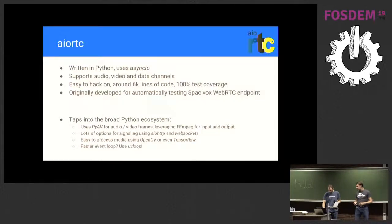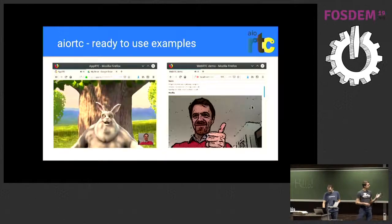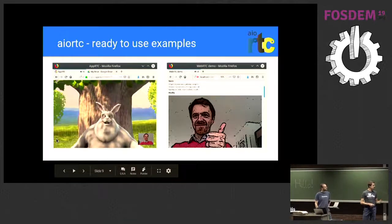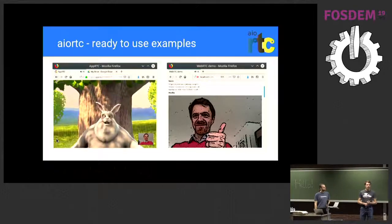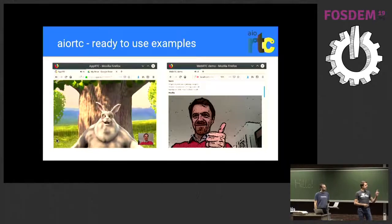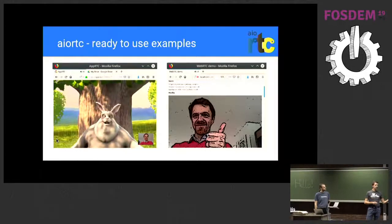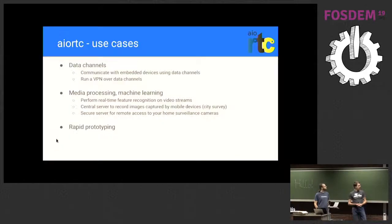AIO RTC comes with a growing collection of built-in examples. On the left, we have streaming Big Buck Bunny from an MP4 file into the apprtc demo website — something you can do with zero extra lines of code. On the right is an example where a browser talks to a Python-based server which handles both signaling and media, applies real-time processing on the video frames, and sends them back — in this case with a cartoon effect.